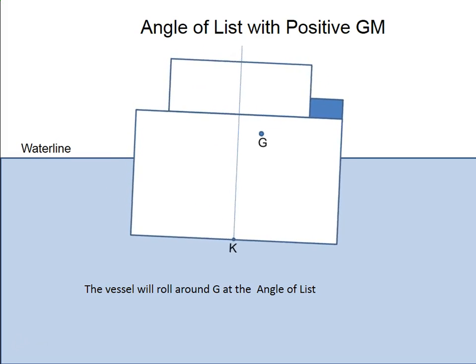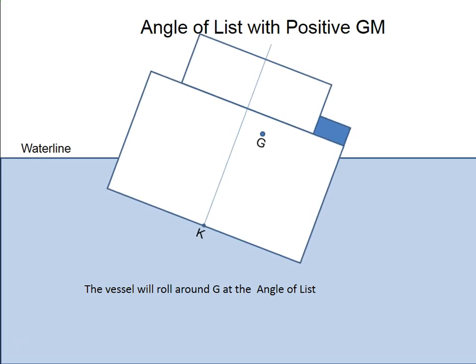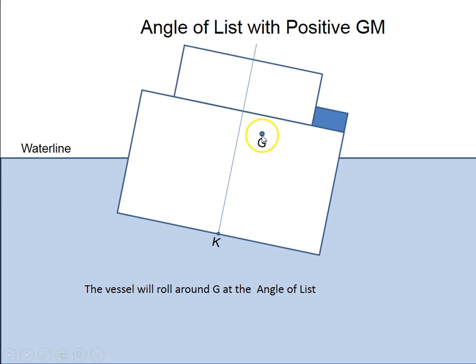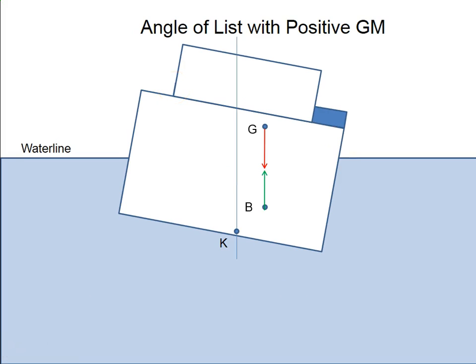And then it'll roll back, maybe almost upright, back to starboard. So the vessel is now rolling around this new center of gravity. This is why list is dangerous, because as the vessel rolls, you're going to be very close to deck edge on one side. So how are we going to get rid of this angle of list? Well, there's a couple of ways we can do it.